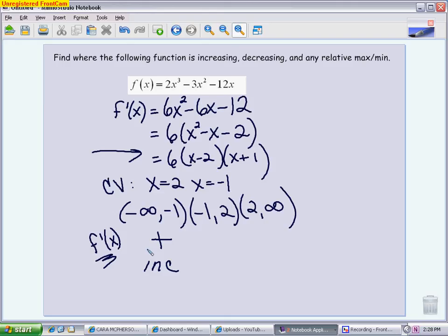For the middle interval, pick a 0. When I put 0 in, I get positive, negative, positive. So that gives me negative, which means it's a decreasing interval. And then I pick anything bigger than 2, like 3, and everything is positive, so I'm back to increasing. So your increasing intervals are from negative infinity to negative 1, and from 2 to infinity, and then the middle interval, negative 1 to 2, is decreasing.